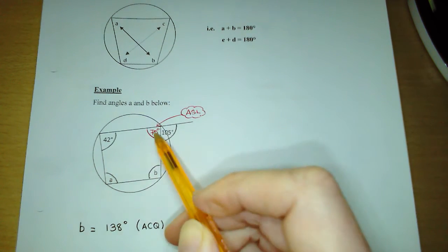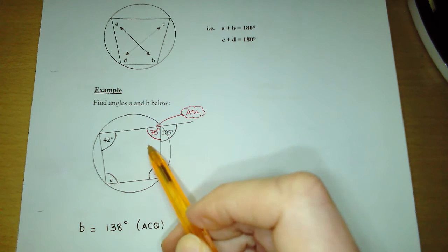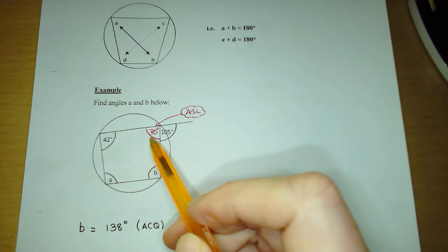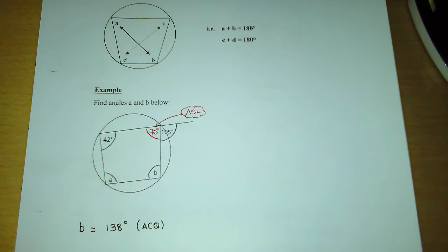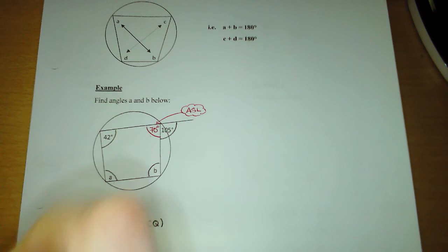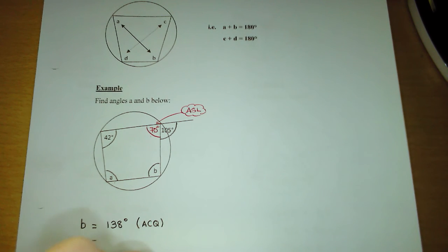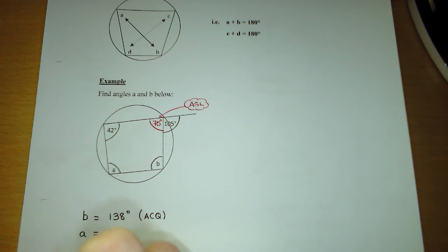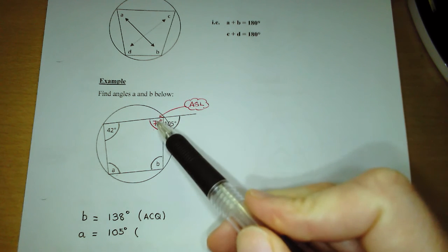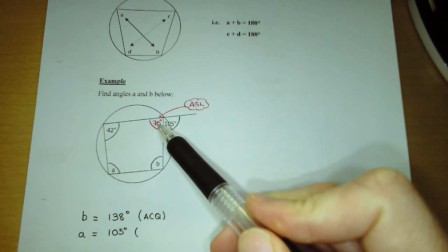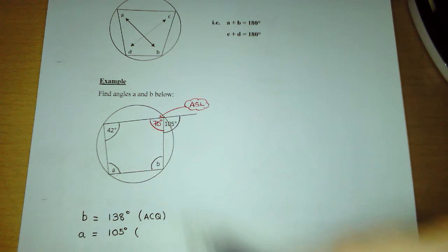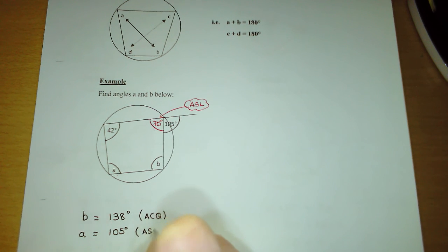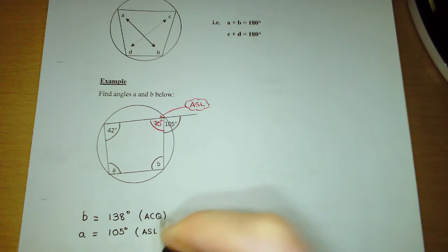So these two angles are diagonally opposite, so they will add up to 180. So to get A, we subtract 75 from 180, and we're going to get 105 degrees. So the angle at A is just equal to 105 degrees. There are two reasons we got that. We used angles on a straight line first to get this angle up here, and then we used angles in a cyclic quadrilateral to help us get A. So the reasons were ASL and ACQ.